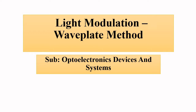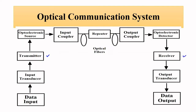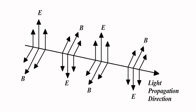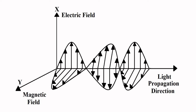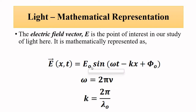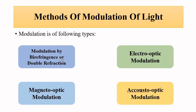We know that in an optical communication system, light is the main signal-carrying component from sender to receiver, or source to destination. The main component of the light wave is the electric vectors — what we want to change is the amplitude, frequency, or phase of those electric vectors. That is the whole principle of modulation. We have discussed various external or indirect methods: birefringence, double refraction, electro-optic modulation, magneto-optic modulation, and acousto-optic modulation.